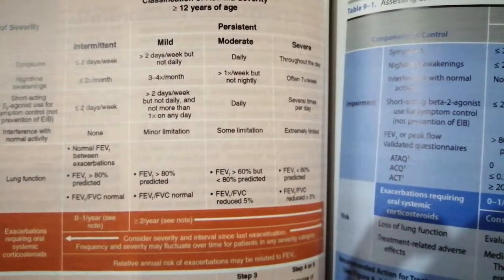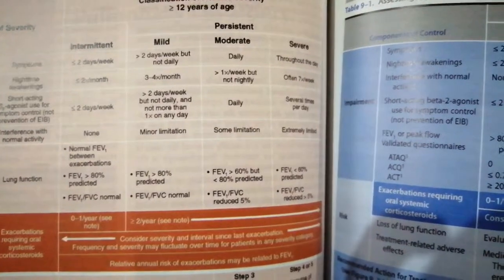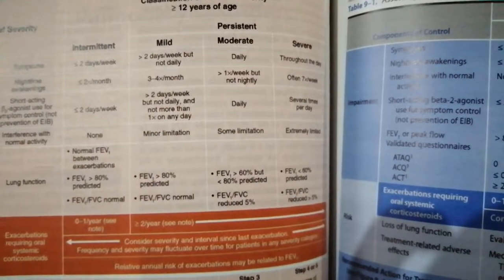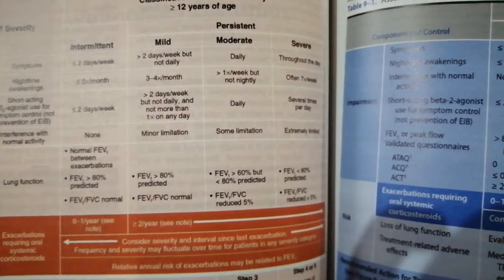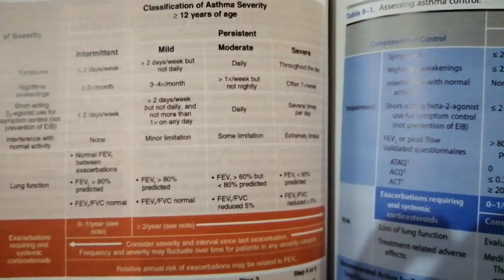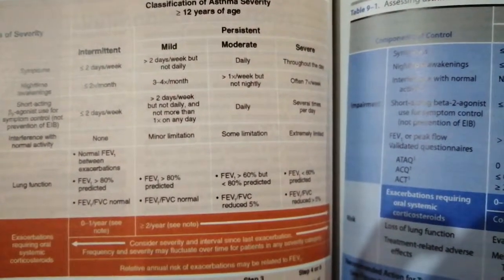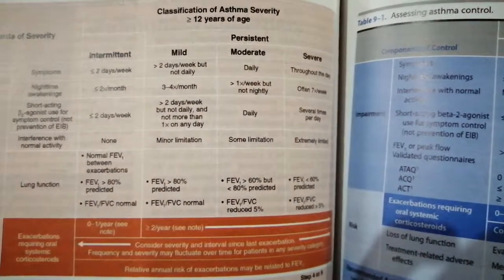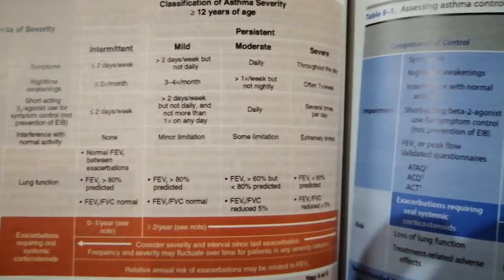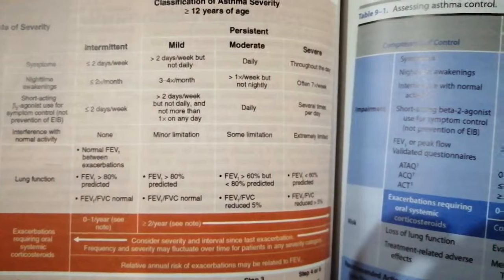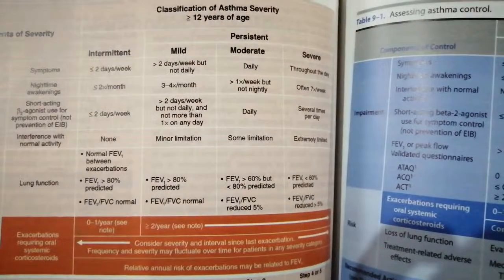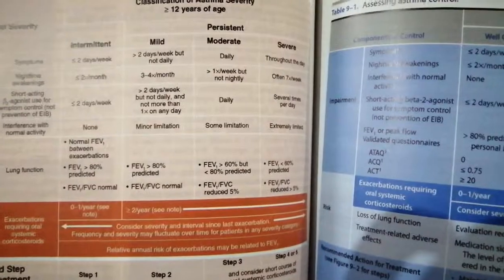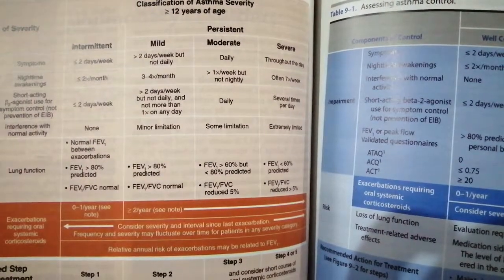In moderate asthma, you have symptoms daily. You are awakened one time per week but not every night, and you use beta-agonists daily. There is frequent limitation — you often cannot perform your normal activities. Lung functions are quite reduced, with FEV1 greater than 60 percent but less than 80 percent.